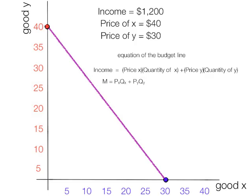Now if we solve for the quantity of Y, we can get a different equation, which is a more typical equation. Now we have the quantity of Y is equal to income divided by the price of Y minus the price of X divided by the price of Y times the quantity of X.